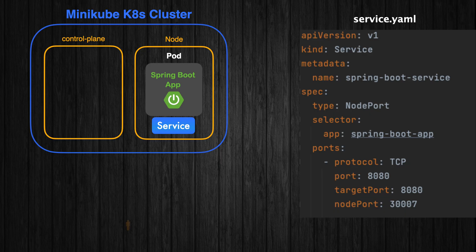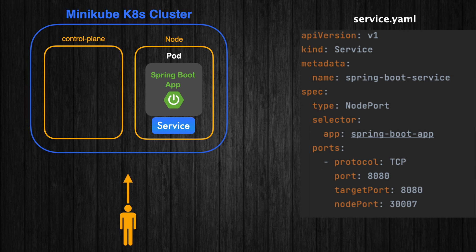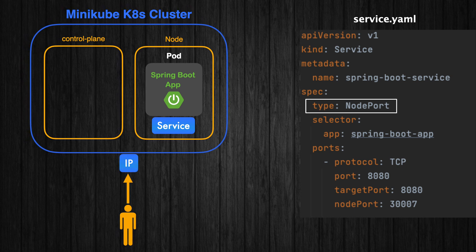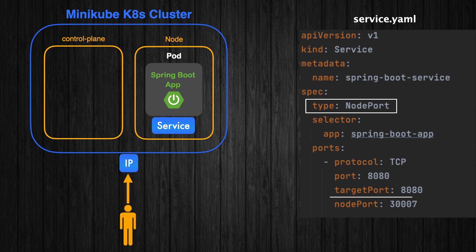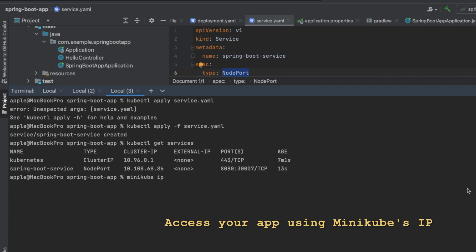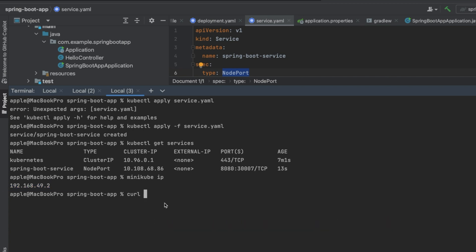Now you can access your Spring Boot application using Minikube's IP and the node port you exposed. In this case, it's 30007. First, get the Minikube IP by running: minikube ip. Then access your Spring Boot application in the browser using that URL.